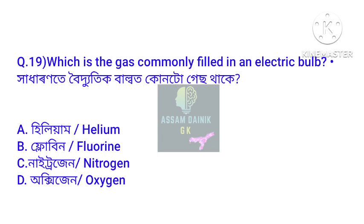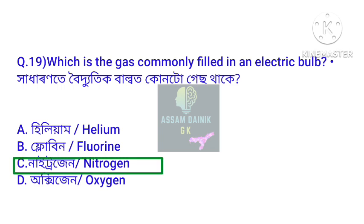Question number 19. Khadharam de boidhutik balb at kuntu gas thake — which gas is commonly filled in an electric bulb? The answer is Option number C — Nitrogen.